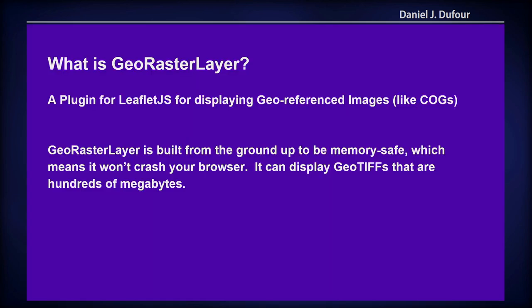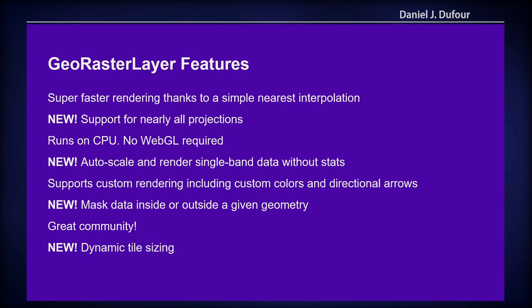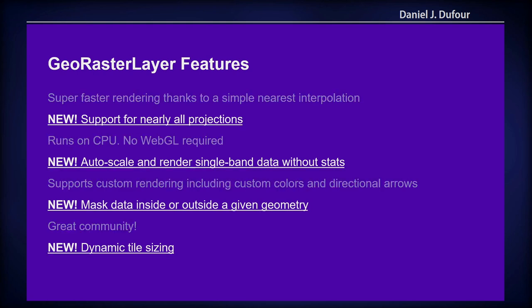What is GeoRaster Layer? It's a plugin for Leaflet, among many great plugins, for displaying geo-referenced images — for example, cloud-optimized GeoTIFFs. GeoRaster Layer is built from the ground up to be memory safe, which means it won't crash your browser. It can display GeoTIFFs that are hundreds of megabytes. It has a bunch of features. I'm going to go over four of the new ones, but I also want to leave time for questions because I'm sure it's going to be a good conversation.